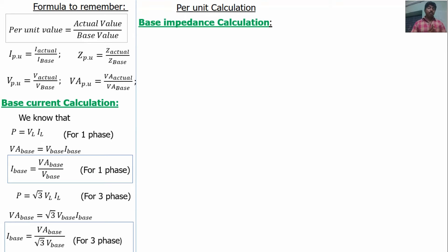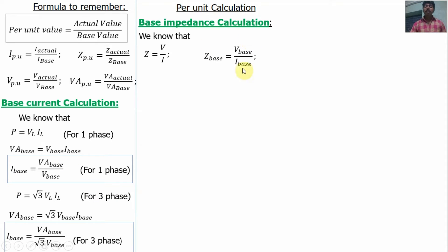Next, base impedance relations. We know that Z equals V divided by I, so Z base equals V base divided by I base. If V base and I base are given, we can calculate Z base using this formula. But generally in the power system, VA base and V base are given. So we need the relation between VA base and V base.